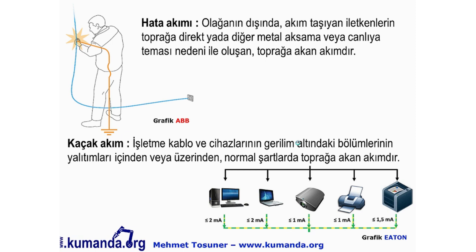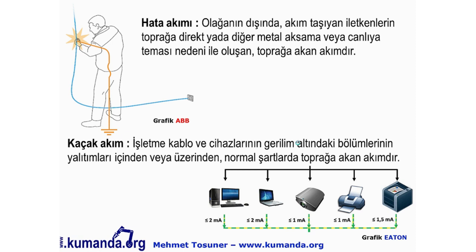Peki kaçak akım nedir? İşletme, kablo ve cihazların gerilim altındaki bölümlerinin yalıtımları içinden veya üzerinden normal şartlarda toprağa akan akımdır. Kaçak akım olağan bir durumdur. Her cihazın, cihazın tipi ve çalışma frekansına bağlı olarak toprağa karşı çoğunlukla kapasitif kaçak akımlar gerçekleşir; bunlar işletme sırasında gerçekleşen olağan kaçak akımlardır.